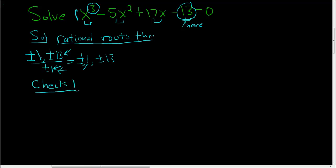When you check 1, you have to use what's called synthetic division. You don't have to, but it's best to. So you write down the 1, and then you write down the coefficients of your original equation. So in this case, it's 1, negative 5, 17, and negative 13. And then you draw a line.